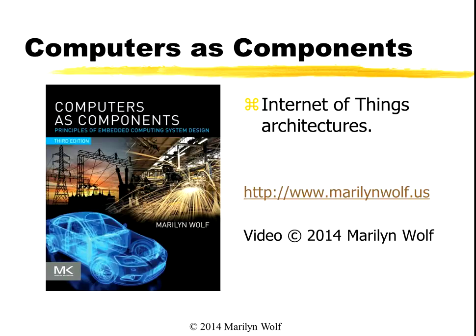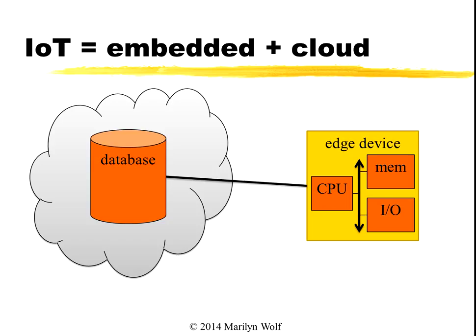Let's look in a little more detail at how the Internet of Things works. The Internet of Things is smart edge devices with their own processors and I/O, connected to databases and processing servers in the cloud.